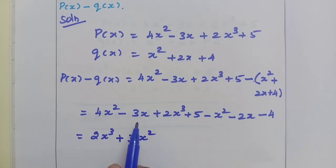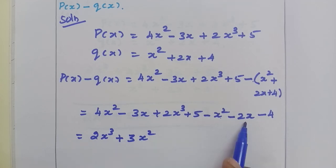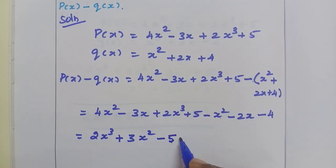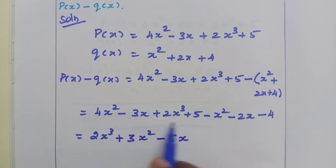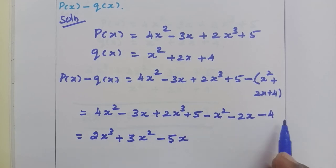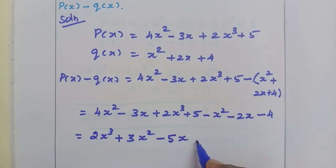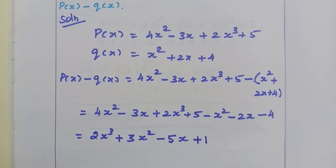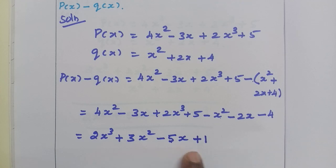Then the x terms: minus 3x minus 2x — both have the same sign, so same sign integers add, giving minus 5x. Then plus 5 minus 4 — different sign integers subtract, giving plus 1. So the answer is 2x cubed plus 3x squared minus 5x plus 1.